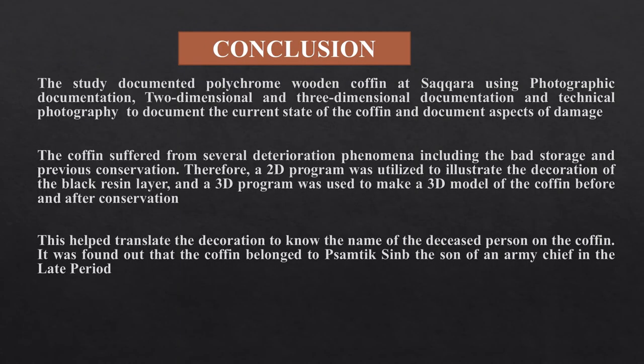Conclusion. The study documented a polychrome wooden coffin at Saqqara using photographic documentation, 2D and 3D documentation, and technical photography to record the current state of the coffin and aspects of damage. The coffin suffered from several deterioration phenomena including bad storage and previous conservation. A 2D program was utilized to illustrate the decoration of the black resin layer, and a 3D program was used to create a model of the coffin before and after conservation. This helped translate the decoration and identify the coffin as belonging to Basmatik Sinib, son of an army chief in the late period, 26th dynasty.